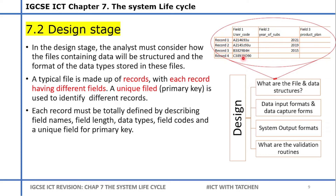This is a file structure where you have fields — this is a field, this is a field, this is a field — and this is a record. A record gives you information about a user. For example, a user has an ID or user code, a subscription, a product plan. This is a record of all the information about a customer. A field is a specific category of information across different people, whereas a record is about a single individual. You learn more about this in databases.